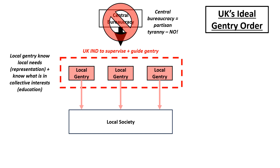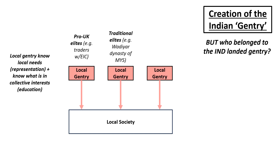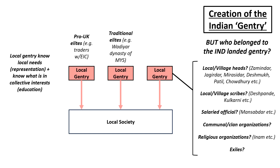But before British reformists could even start on their ambition, they first had to answer a basic question — who actually belonged to the Indian landed gentry? In some places the answer was obvious. Swaths of annexed territory were given to those who had helped the British, while the original Hindu dynasty was restored in subsidiary Mysore alongside the lords that Tipu Sultan had repressed. But in the rest of rural India, the British had the choice of several groups, all of whom held some power under feudalism — village leaders designated to collect tax, village scribes who audited tax collection, and otherwise unconnected officials whose pay the tax had been earmarked for. Communal, clan, and religious organizations also had a say in village governance, not to mention the various exiles who now petitioned the new regime to restore their former status.